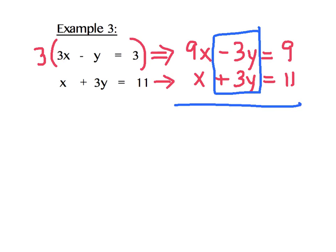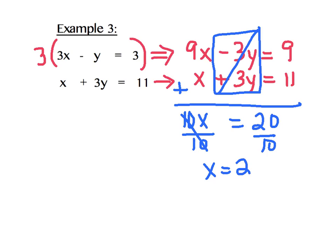And hopefully you can see that right here, we now have opposites in our y column. So I'm going to go on to the next step, which is going to be add up our columns. 9x plus 1x is 10x. Negative 3y plus 3y is 0. They cancel each other out. 9 plus 11 gives me 20. And now I'm going to use inverse operations to solve for x. In doing so, I find out that x equals 2.